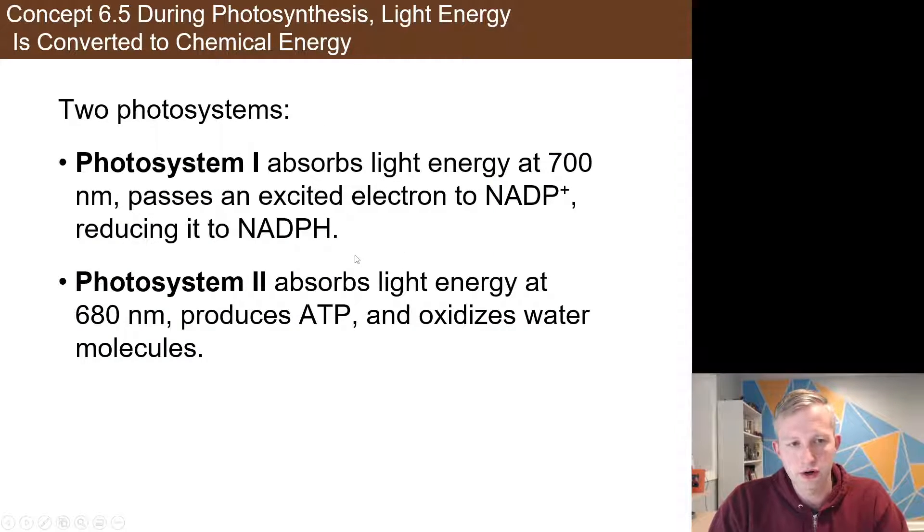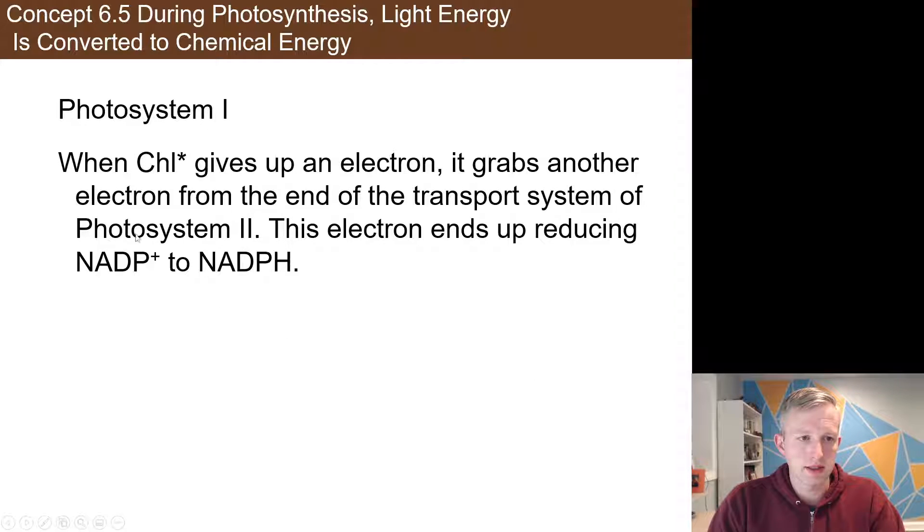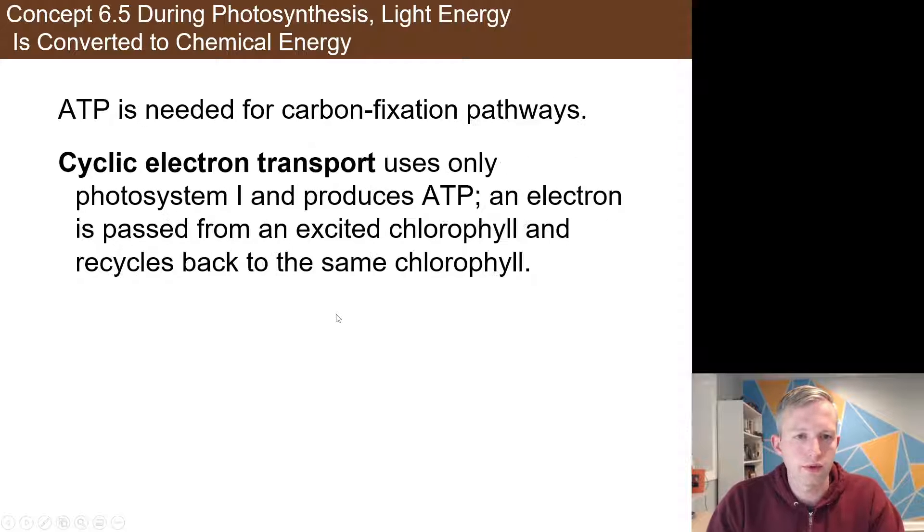So I've already kind of gone over this, but photosystem I is ultimately producing the NADPH. Photosystem II is providing the chemical gradient to produce ATP. And that goes into a little bit more detail just about the excitement of the chlorophyll and how that electron then gets passed on to another molecule, which changes its shape, which changes its shape, so on and so forth. We've seen that sort of a metabolic pathway before.